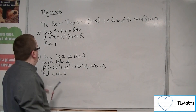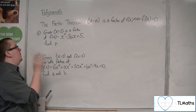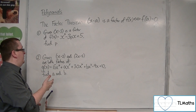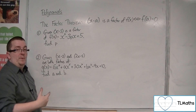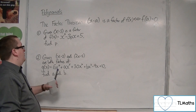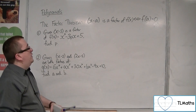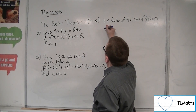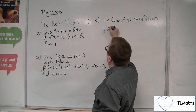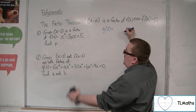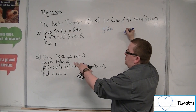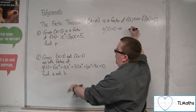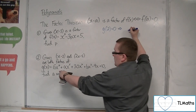In this problem we know that x minus 2 and 2x minus 5 are both factors of g of x, where we've got a and b to find. The x minus 2 we can deal with at this stage: because x minus 2 is a factor, g of 2 must be 0, so substituting 2 into this.